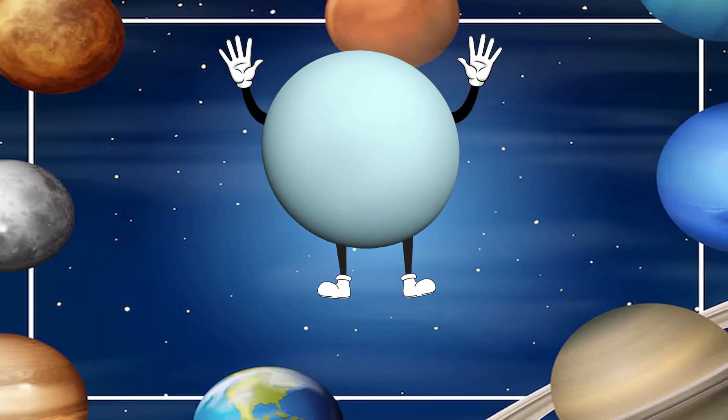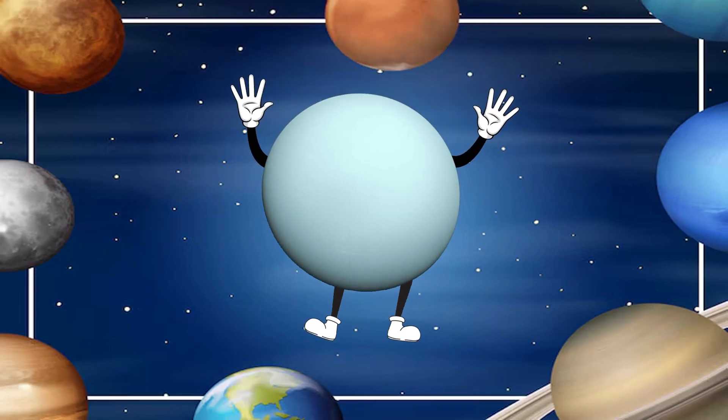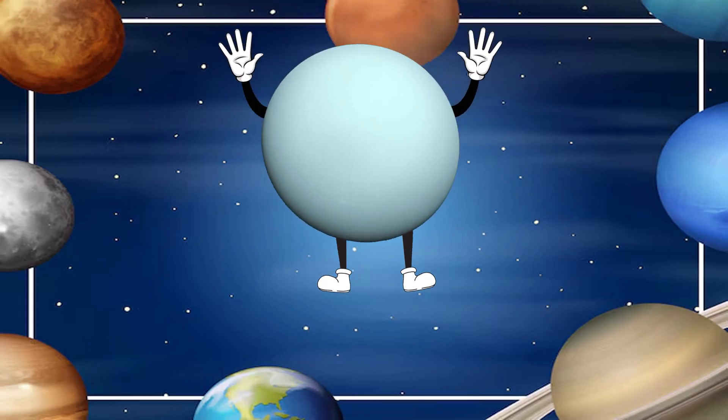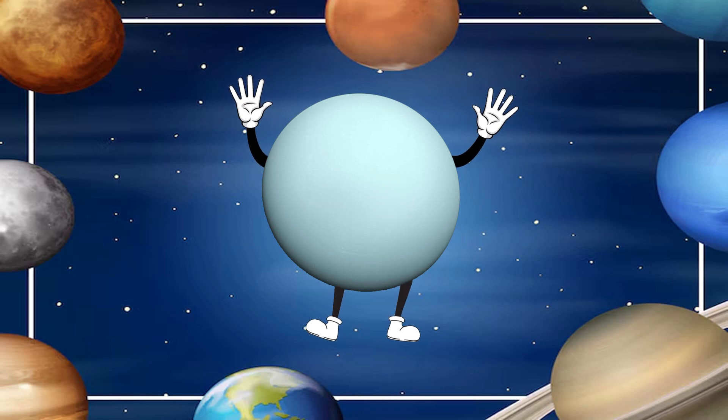My name's Uranus, I am blue in color, I'm the seventh planet from the sun. Humans have named me the icy planet, because I am the coldest one.